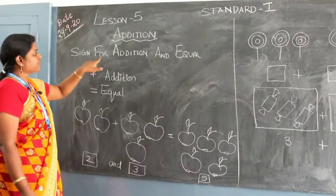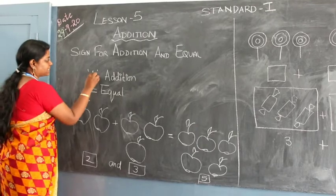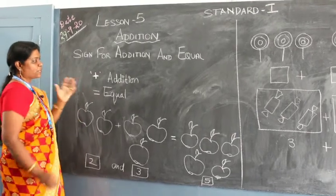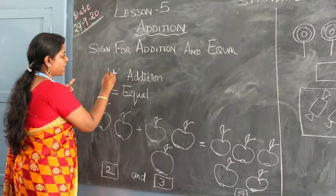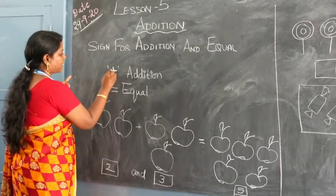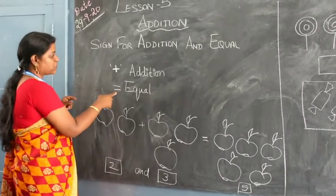So sign for addition and equal. This is the plus, this plus symbol is your addition symbol. So when you write something in addition, you need to put this plus symbol. This is your addition symbol. And this is your equal to symbol. This is your equal to.